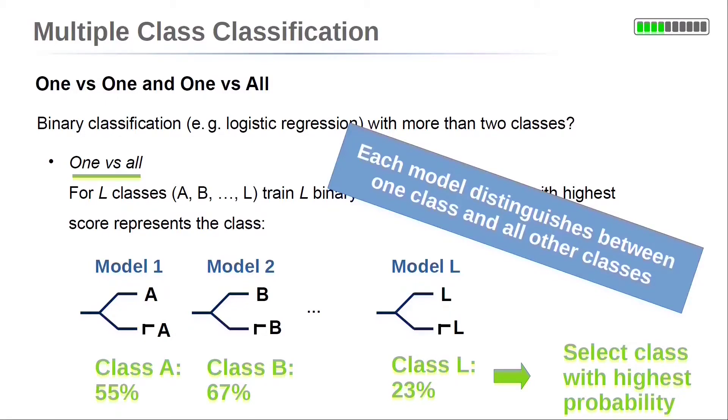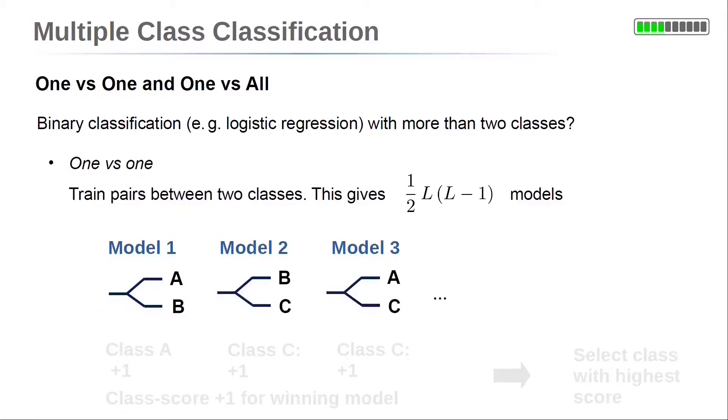Note that the name one versus all indicates that each model can decide between a single class and all other classes. The second approach is called one versus one.